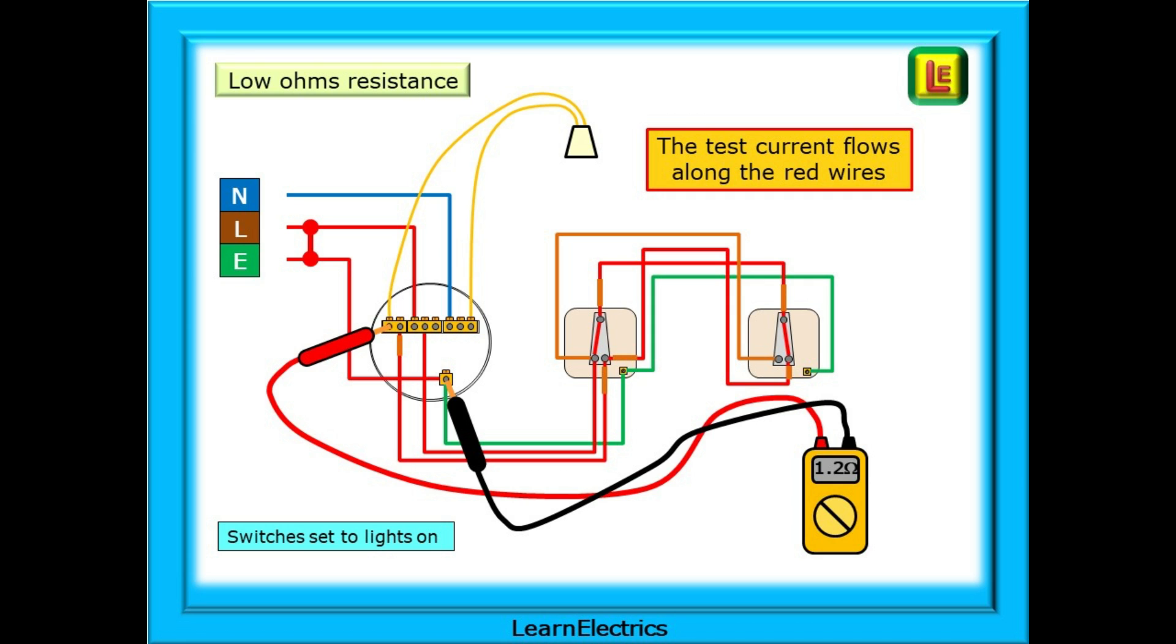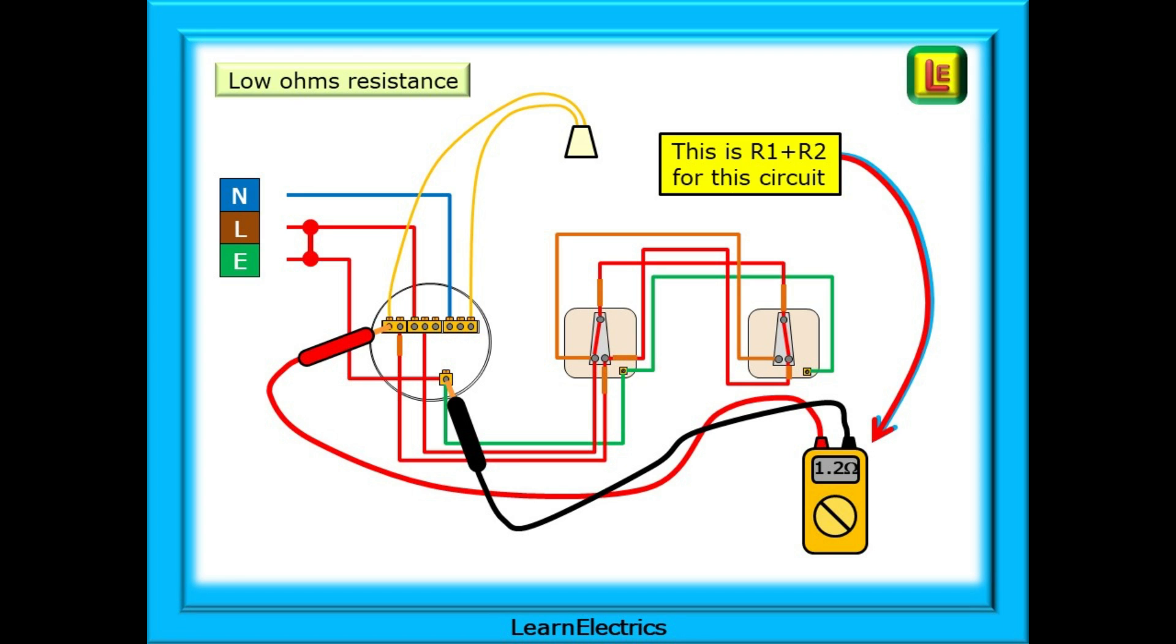You should have a low ohms reading of just one or two ohms or so. Any reading above five ohms is an incorrect reading. If your meter reads the maximum, 299 ohms or 999 ohms, OL or similar, then this usually indicates that one of the switches are set to lights off. Simply operate just one of the switches and this should now test OK. This reading, 1.2 ohms as shown here, is the R1 plus R2 for this circuit and can be recorded on the test certificate.